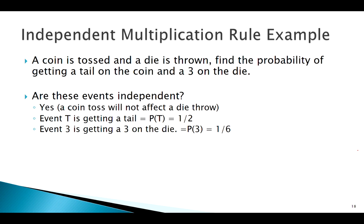Are these independent? Yes. Call tails event T, probability of one-half. Call getting a three event 3, probability of one-sixth. Putting those together, T and 3, we're just going to multiply the two together for a probability of 1/12. Again, we're seeing this theme - when things are independent it makes stuff easy.